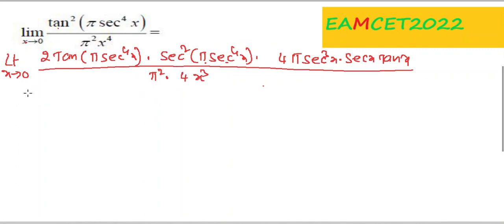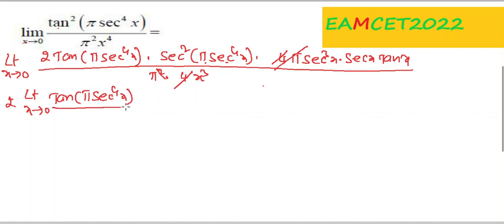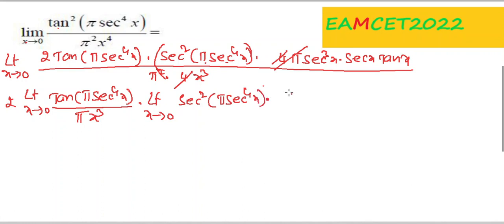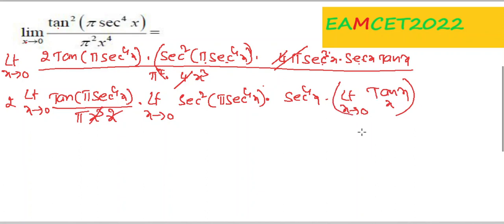Substituting x tends to 0: the 4s cancel and the π cancels, giving 2 · tan(π·sec⁴x) / (π·x³) · sec⁴x · sec³x · sec x. Separating tan x / x (which → 1), we get limit x tends to 0 of tan(π·sec⁴x) / x² multiplied by relevant constants.